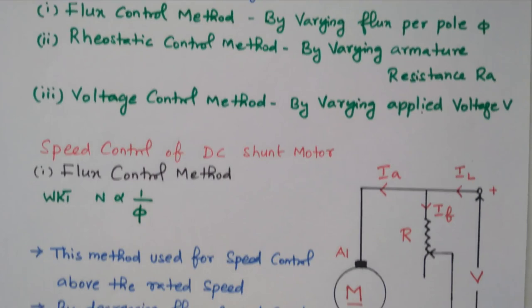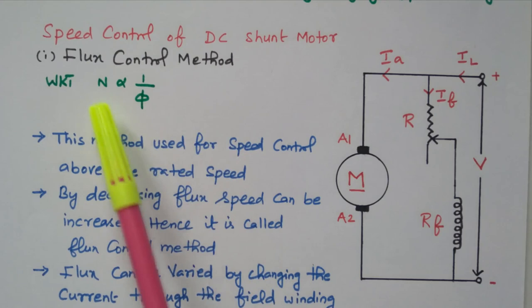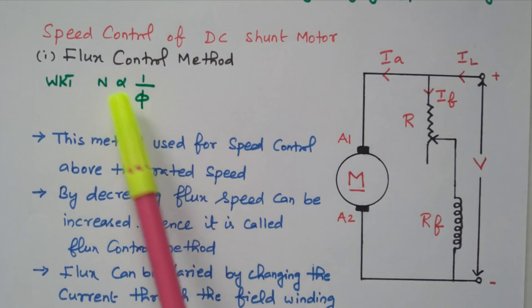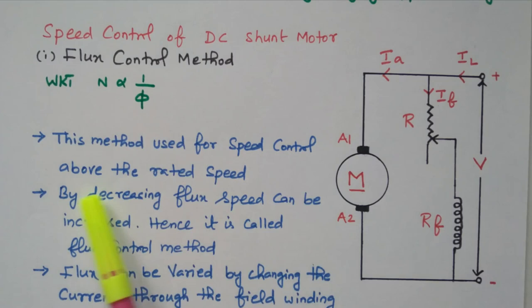We will see the speed control of a DC shunt motor. The first method is the flux control method. The relation between speed and flux is N is directly proportional to one by phi — they are inversely proportional. By decreasing the flux, the speed will increase.